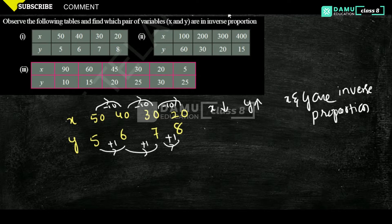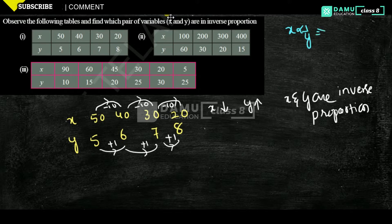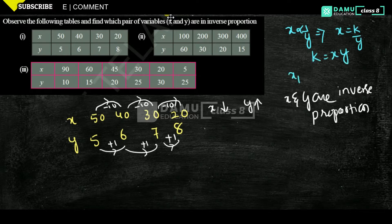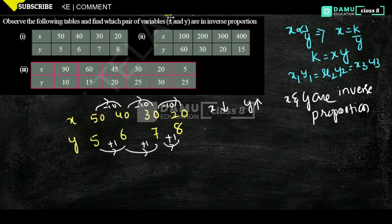Inverse proportion is nothing but: x is inversely proportional to y, that implies x equals k divided by y, then k equals x times y. That means k is constant: x1·y1 = x2·y2 = x3·y3 = k. That is the formula of inverse proportion.